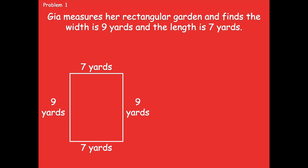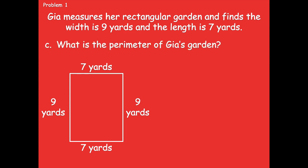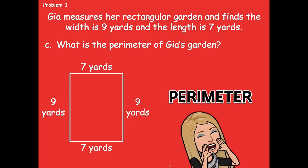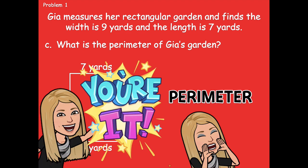Let's look at part C. It says what is the perimeter of Gia's garden? Are we solving for the area or the perimeter for part C? The perimeter. I want you to pause the video and solve for the perimeter of Gia's garden. We did the area using multiplication. Now think about what operation we need to be doing to solve for the perimeter. Remember, the perimeter is all four sides, not just two. Write an equation and a statement to find the perimeter of Gia's garden, and then click play when you're ready to go over it together.